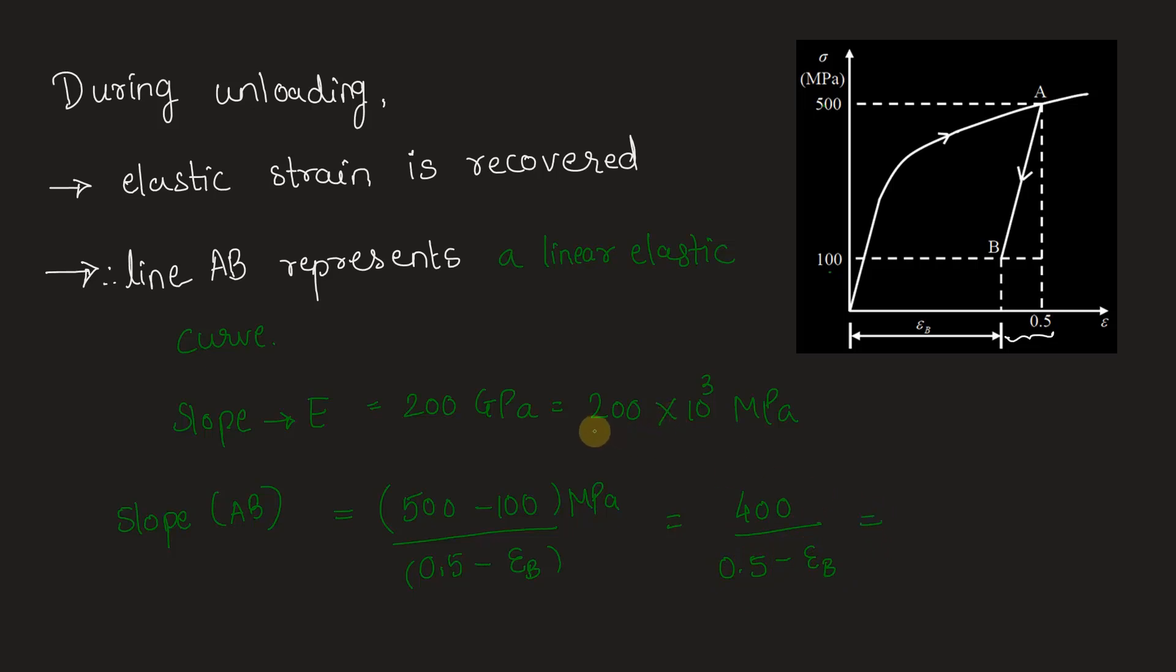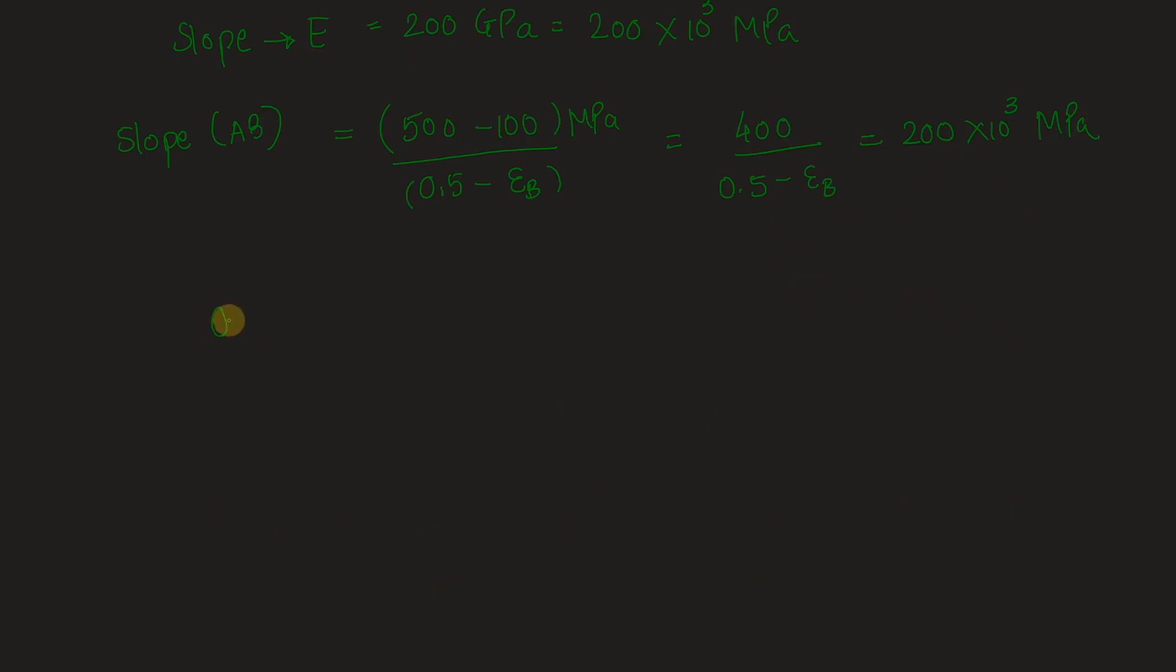This is equal to E, because slope of line AB is nothing but Young's modulus. Hence we equate: 200 × 10³. By solving this equality, we get 0.5 - εB = 400/(200 × 10³), which is 0.5 - 2 × 10⁻³. We get the answer to be 0.498.